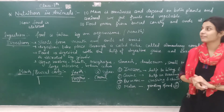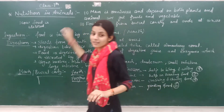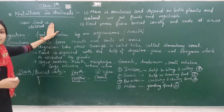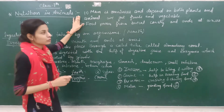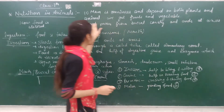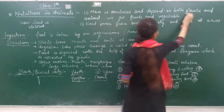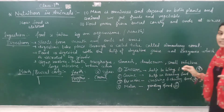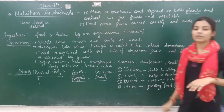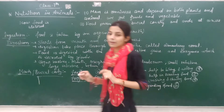Hello students, today we will start our next topic that is nutrition in animals. What is omnivores? It depends on plants or animals. We have food from plants. We have eggs, honey, milk. Human beings directly depend on plants and animals.